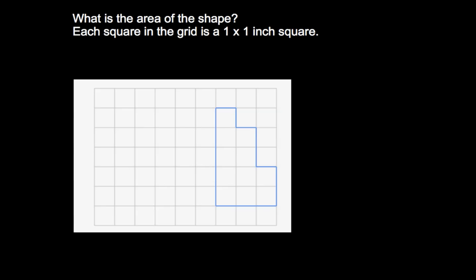We are going to continue our discussion about area, and we're actually going to measure the area of some shapes by counting the number of unit squares that we have. The name of the unit depends on what unit you're using — it could be a square inch, a square foot, a square centimeter, a square meter, a square kilometer. Basically, any unit you're using; you can even make up a unit, like a 'tim' giving you a square tim, or a 'bonbon' giving you a square bonbon. It all depends on what unit you are using.